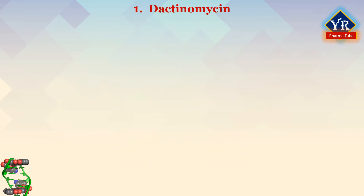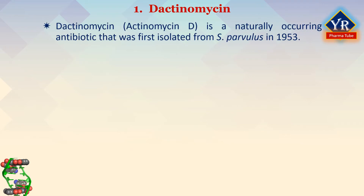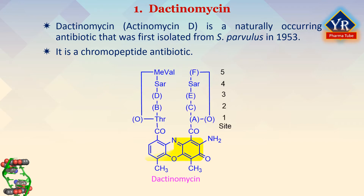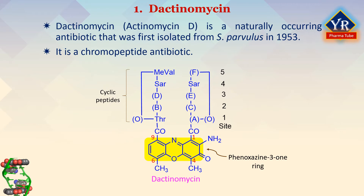The first individual drug is dactinomycin, previously called actinomycin D. It is a naturally occurring antibiotic first isolated from Streptomyces parvulus in 1953 and was shown to be an effective anticancer agent in children. It is also known as a chromopeptide antibiotic as it contains a tricyclic phenoxazin-3-one which imparts dactinomycin and its derivatives a yellow to red color. The drug possesses two identical cyclic pentapeptide side chains and the chromophoric 2-aminophenoxazin-3-one ring system bearing two methyl groups at C4 and C6.